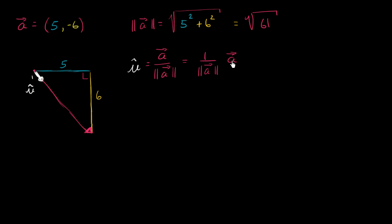And so this makes it pretty clear, we're just scaling vector a. So this part right over here, that's going to be equal to 1 over the square root of 61. We figured out that this was already the square root of 61. And we're going to multiply it times vector a, which is 5 comma negative 6.